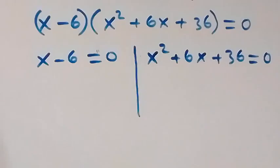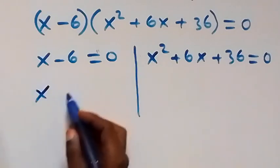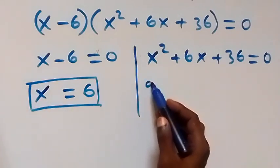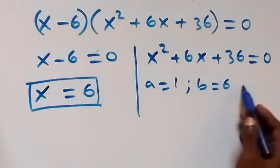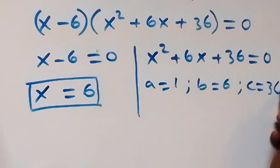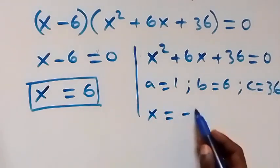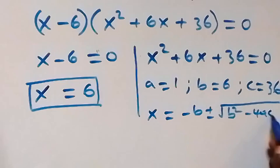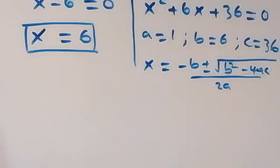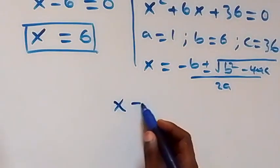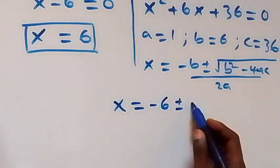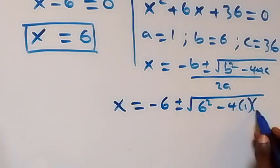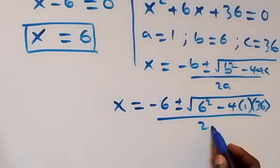Solving the first case, x minus 6 equals 0 gives x equals 6. For the second case, we have a quadratic where a equals 1, b equals 6, and c equals 36. Using the quadratic formula x equals negative b plus or minus square root of b² minus 4ac, all over 2a, we get x equals negative 6 plus or minus square root of 6² minus 4 times 1 times 36, over 2 times 1.